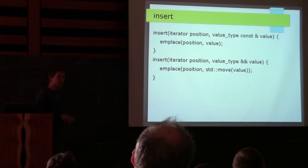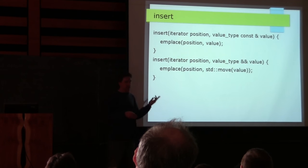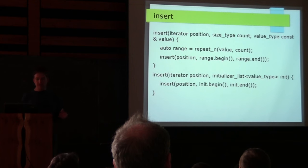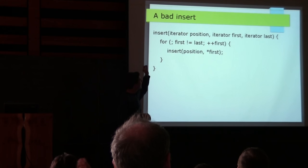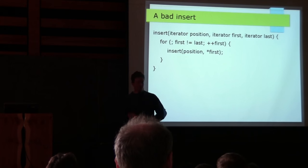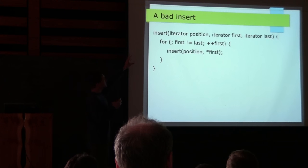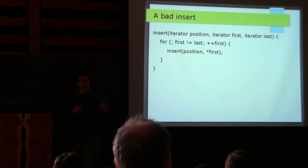Insert has a few different overloads. Most of them we can just call emplace, similar to push_back and emplace_back. Insert taking a count and a value is similar to the assign overload; initializer list is simple. The tricky version of insert takes two iterators — the naive version is very bad: it inserts at the position, shifts everything over, inserts, shifts everything over again — proportional to the size of the range. This actually violates the complexity guarantees the standard gives you for insert. Don't do this.